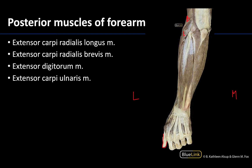Right next to the extensor carpi radialis longus will be the brevis. So the extensor carpi radialis brevis is just next to the longus. It does have its proximal attachment on the lateral epicondyle, and from here on out these other muscles also have their proximal attachments on the lateral epicondyle.